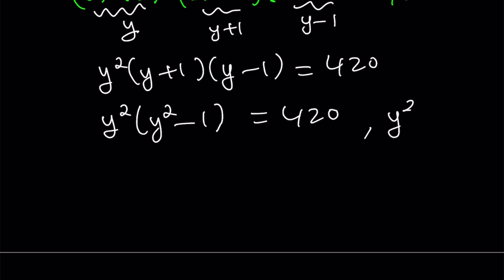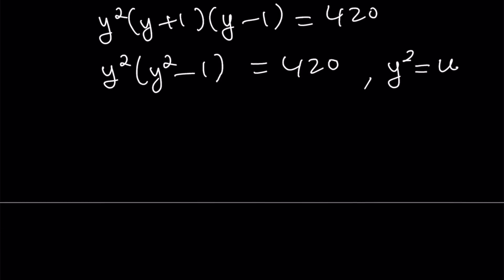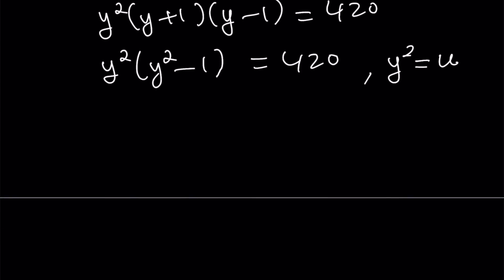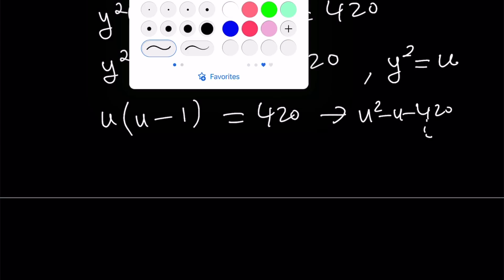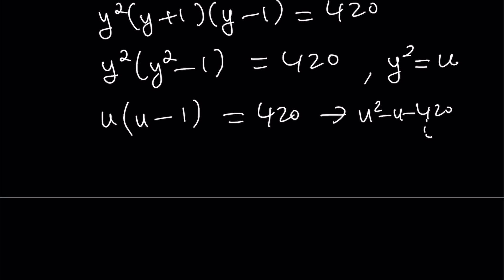Now, I have y squared and y squared minus 1. So we're going to use substitution one more time. Let's set y squared equal to u. So it's going to be u times u minus 1 equals 420. Obviously, you can just go ahead and distribute this and turn it into a quadratic equation. But I'm going to solve it differently because there are integer solutions. u and u minus 1 are consecutive integers, and 420 can be written as the product of two consecutive integers. What are they? 20 and 21. Therefore, u can be 21 and then this can be 20.